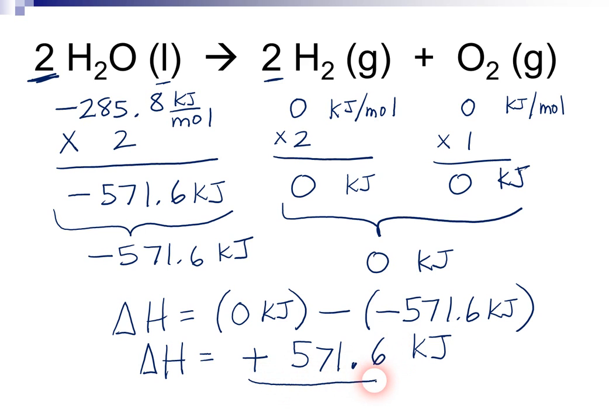Okay, so that's the answer. And so that's all you have to do. It's just the sum of the products minus the sum of the reactants. Now, the fact that this is positive tells us that this is an endothermic reaction. Okay, that's what the positive indicates. So what this is telling us is if you take two moles of water and break it down into two moles of hydrogen and one mole of oxygen, you're going to absorb about 571.6 kilojoules of energy.